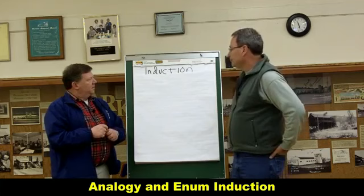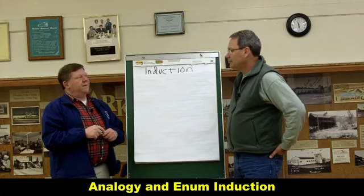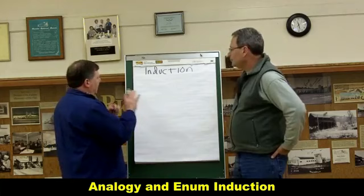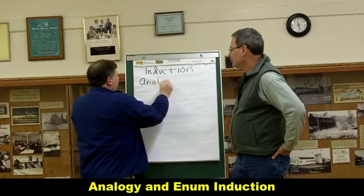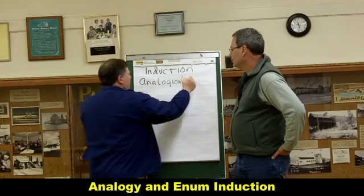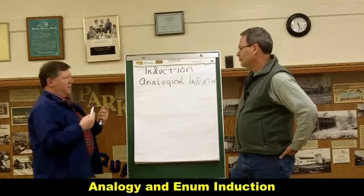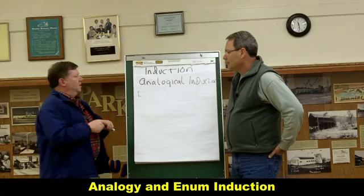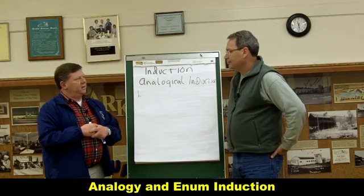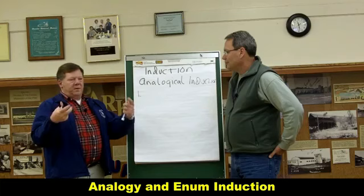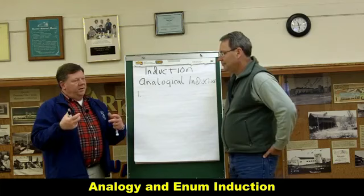There are certain characteristic patterns of inductive reasoning, and we're going to look at five of them in this short video. The first very standard, common pattern of inductive reasoning is called reasoning by analogy, or analogical induction, or analogical argument. In an analogical argument, an analogy is a similarity between two things, and so two things are compared, and the first step is to show that they have many characteristics or features in common.